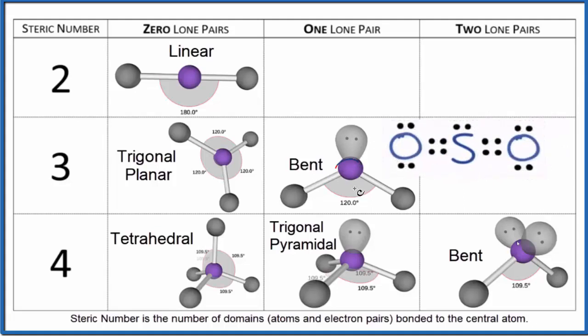We have the central sulfur here, then we have that lone pair, and then we have these two oxygen atoms out here. And with molecular geometry, we don't worry about whether this is a double or a single bond.